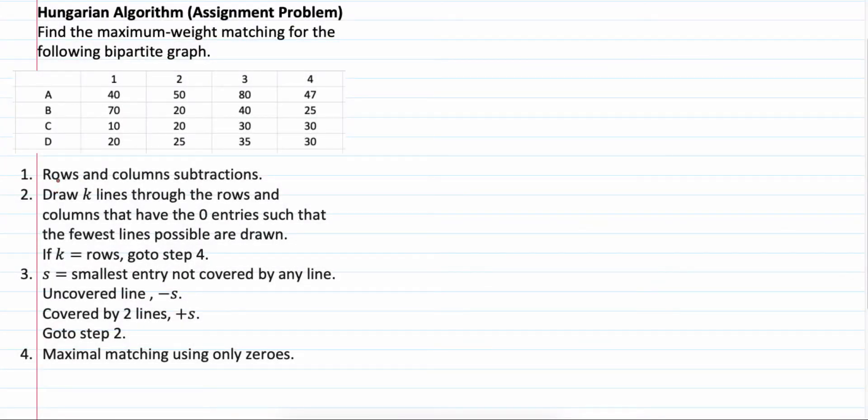4 steps. Step 1. Rows and columns subtraction. For the smallest number in each row, we reduce every other column by subtracting that row. For example, the smallest one here is 40 in this row. So, every column for row A must subtract 40. And so on.